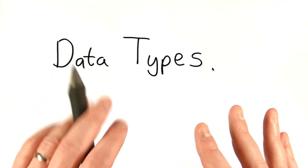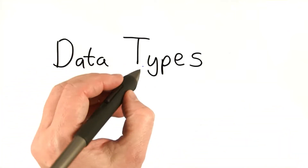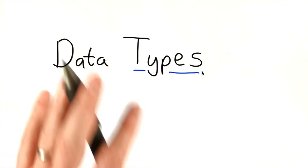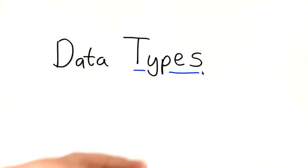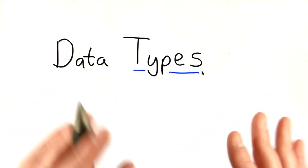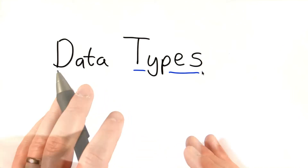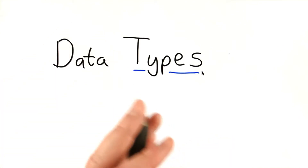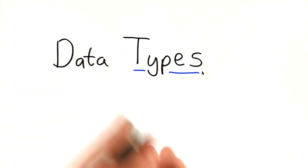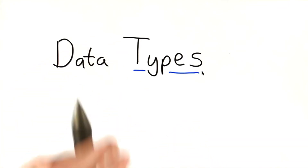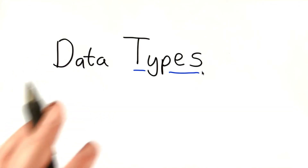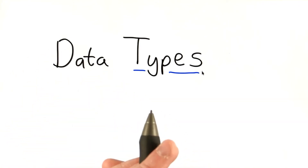One of the most important concepts in programming is the notion of a data type, which we also just call a type. You've been using types since your first program, so you already know a fair bit about types. We just haven't talked about it explicitly until now. Understanding types more deeply will make you a better programmer, will help you understand more what's going on when your programs run. It will also get you to the point where you can define your own data types, and that will be useful for making our search engine code more modular like we just talked about.